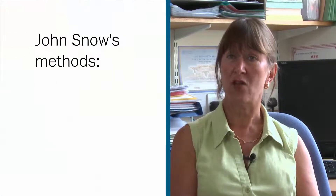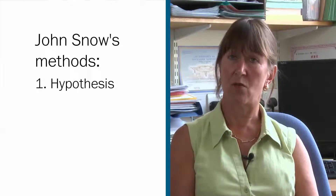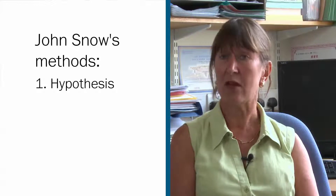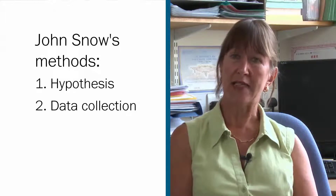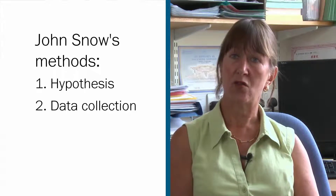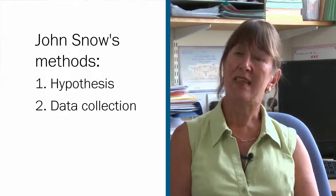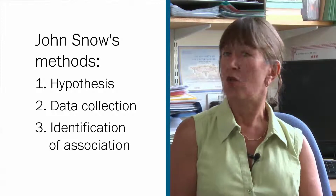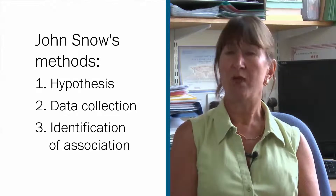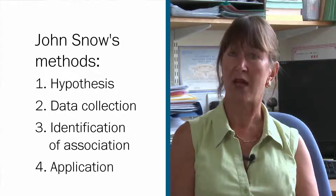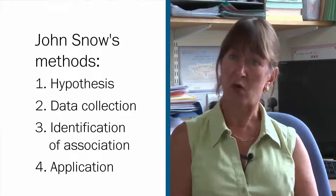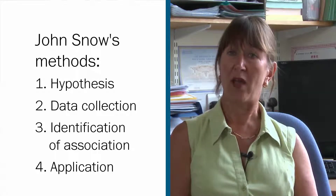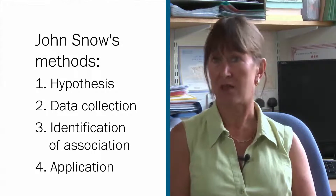John Snow is known as the father of modern epidemiology and his careful methods are still used today. First, he started with a hypothesis — that cholera was a waterborne disease, while the current opinion was that it was airborne. Next, he collected data on cholera deaths and where the water consumed by those people was collected from. He then sought to show an association between the cholera deaths and a certain source of water. From this, he was able to apply the results: there was one water source associated with cholera deaths, and he persuaded the local council to remove the pump handle, thereby interrupting the source of contamination.